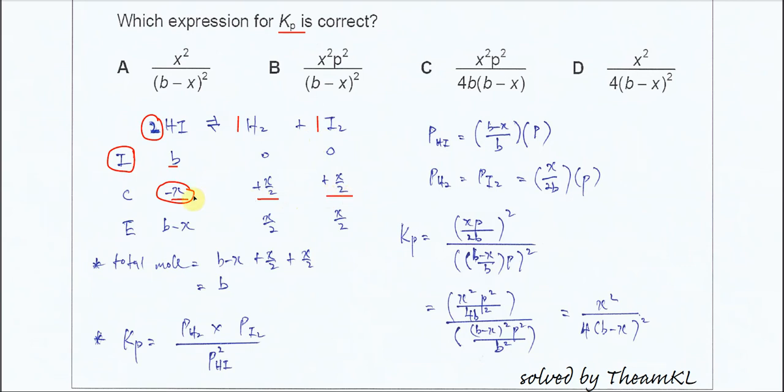After that we need to find the E for equilibrium. So we just need to sum up I and C, then we'll get E. So after we sum up, we get B minus X for HI, H2 is X over 2, I2 is X over 2.